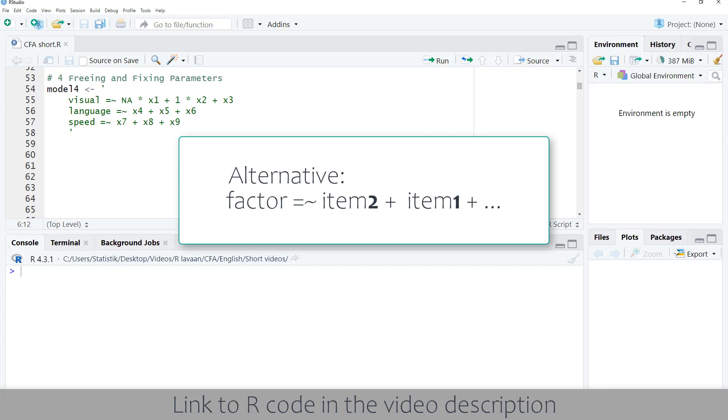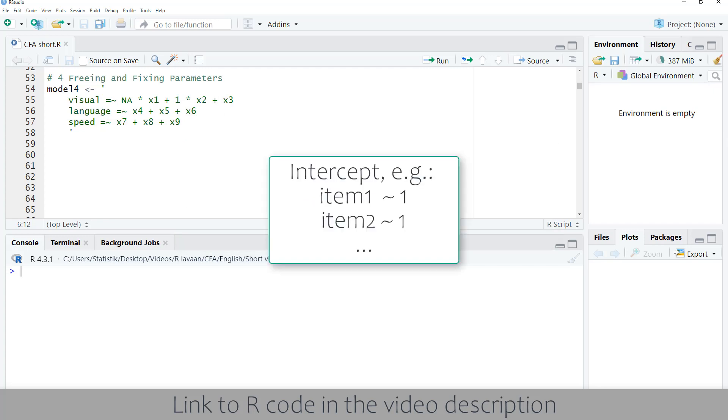As a second possibility, we could simply rearrange the order of the items. Furthermore, we could define intercepts. However, in most cases, it's easier to do that during the model estimation with an additional parameter there.